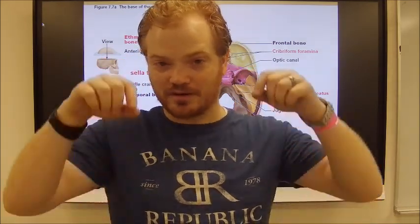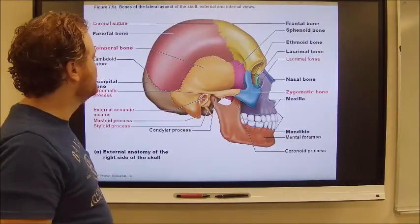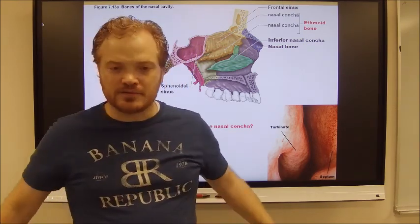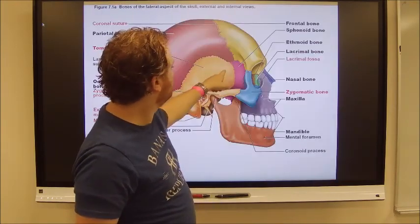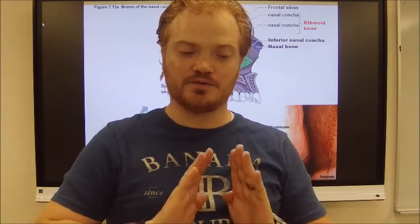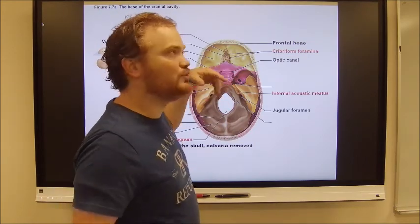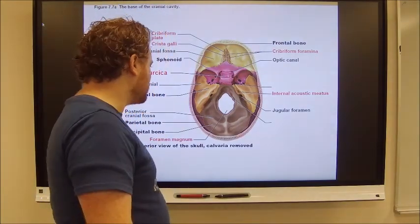When you sniff, air is pushed through the nose, spun by the turbinates, and hits the underside of the cribriform plates where the neurons are. Those neurons pick up chemicals in the air and carry that nervous signal through the olfactory foramina back up into the brain to the olfactory bulbs. So those little holes in the cribriform plates are where nervous tissue passes through to carry smell signals from your nasal cavity up into your brain.